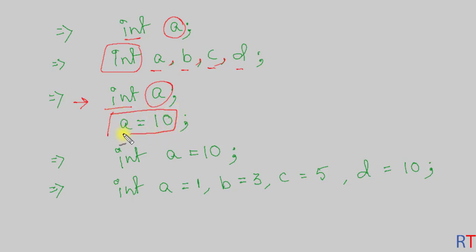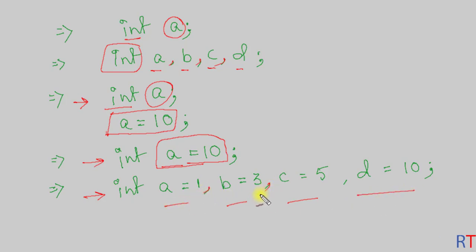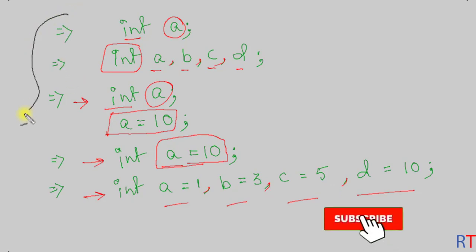It is also possible to declare one variable and then assign some value to it later on in the program. It is also possible to declare one variable and initialize it with some value at the same time. We can also declare and initialize multiple variables at the same time — in that case, we separate them with the comma separator.